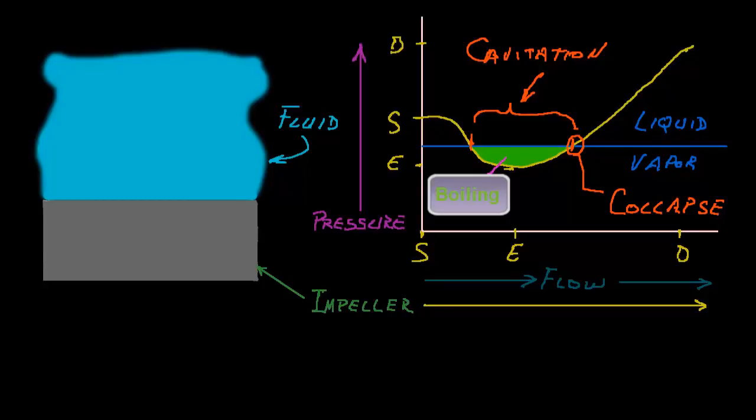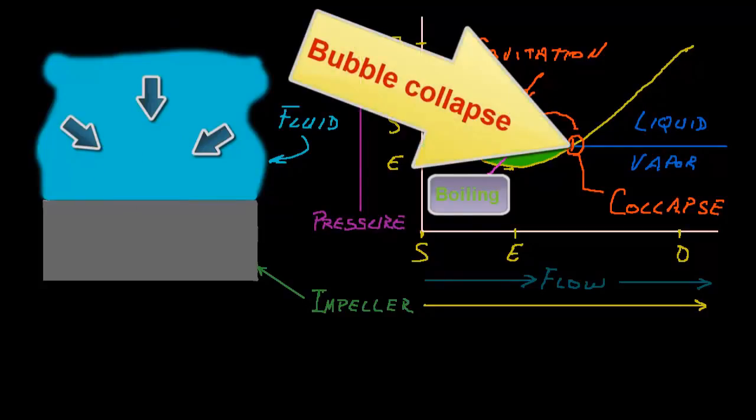Returning now to our earlier illustration. Similar to the collapsing balloon that we just saw, as the pressure of the fluid increases during the pumping cycle, at some point, the vapor pressure inside the gas bubble is unable to support the external fluid pressure of the surrounding liquid. At that point, the gas bubble collapses or implodes under the pressure.